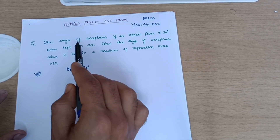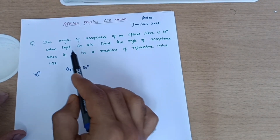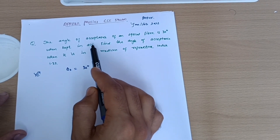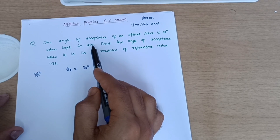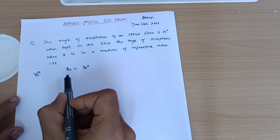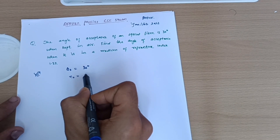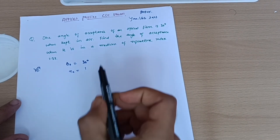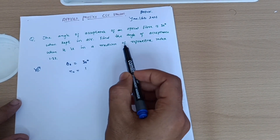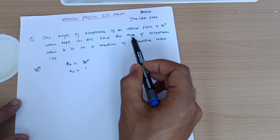First, write down the solution and the given data. The angle of acceptance is given as 30 degrees, when kept in air. The medium is air, and as you already know, for air the refractive index is always 1. That is denoted by n₀; the refractive index of air equals 1.